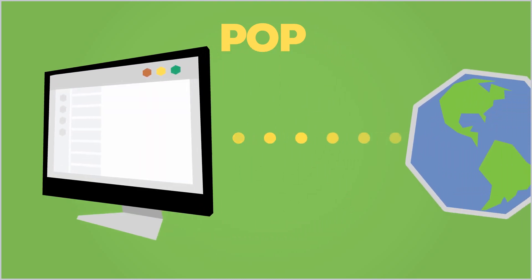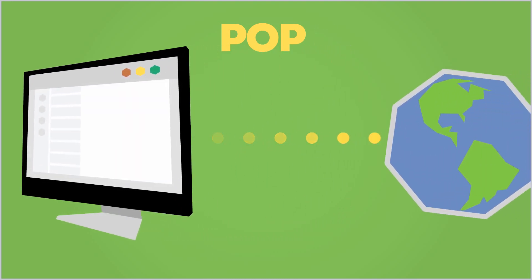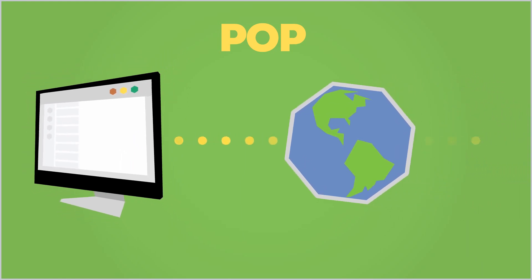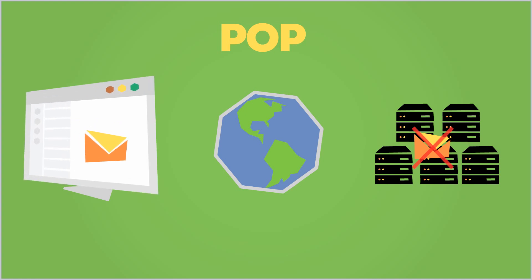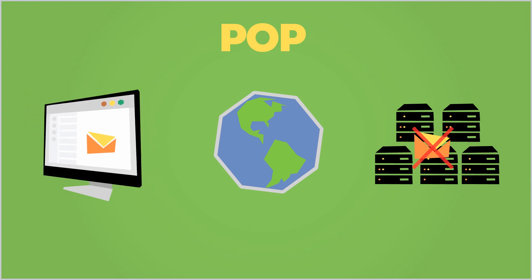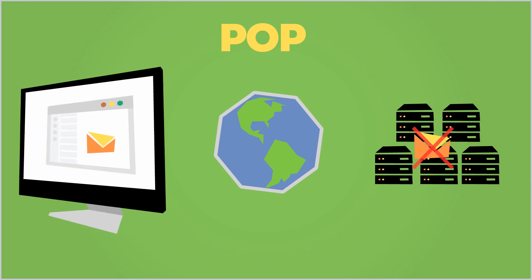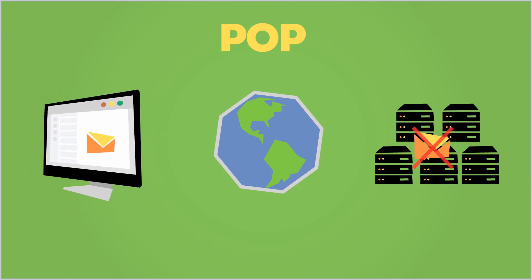Using POP, an Internet-connected email client accesses a remote mail server, downloads all email to your local computer, and marks the messages for deletion on the email server. This means the messages you retrieve using POP can only be viewed in the specific email client on the specific computer that you downloaded them to. Once downloaded, you cannot access these messages via webmail or a different email client on another computer.